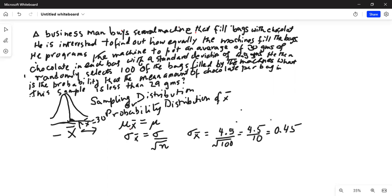So the question asks, what is the probability that the mean amount of chocolate per bag in this sample is less than 29 grams? We know at the center, mean is 30. So 29 has to be on the left of the mean. So it is somewhere over here, 29, on the left of the mean. And we want to find the area to the left of 29.